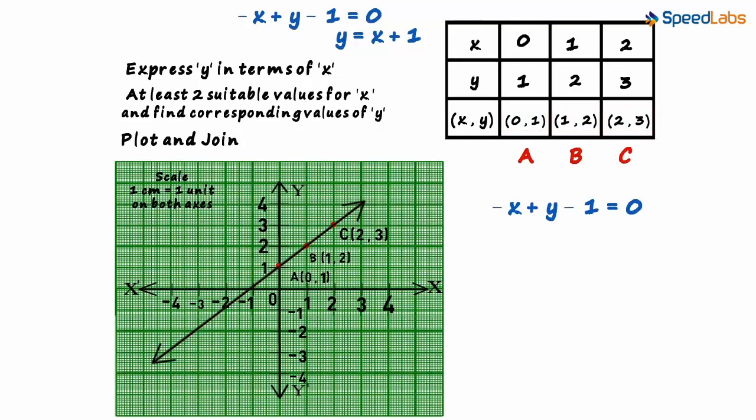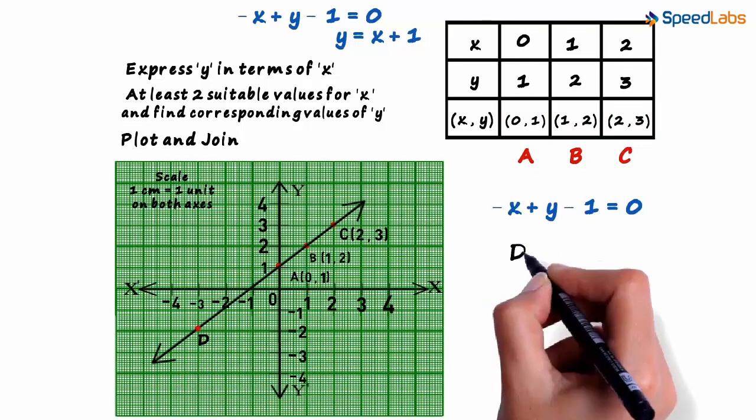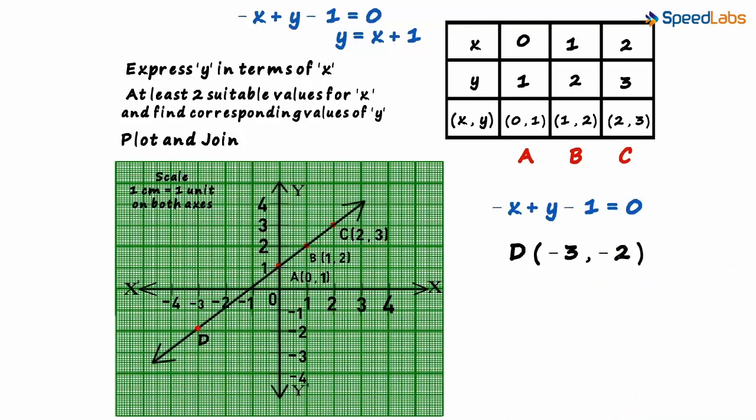You would then have a chance to rectify your error. To be even more sure about your answer, this is what you can do: take a random point on the line, say point D. Its coordinates are minus three comma minus two. These values should satisfy the equation.